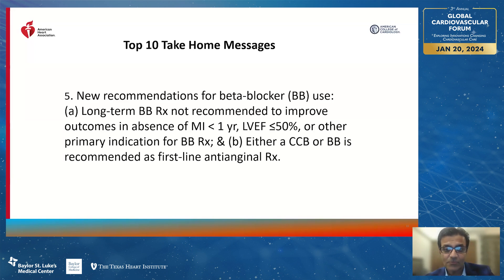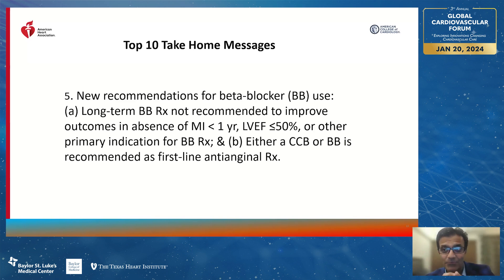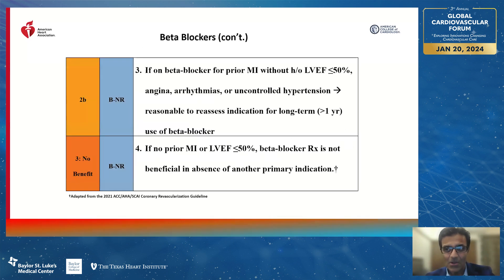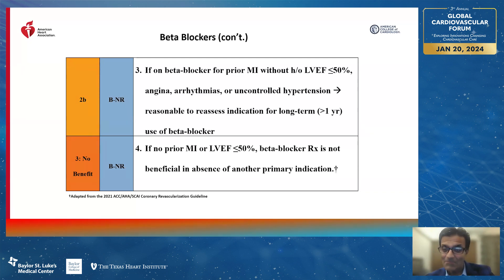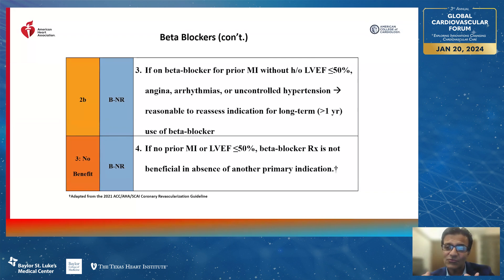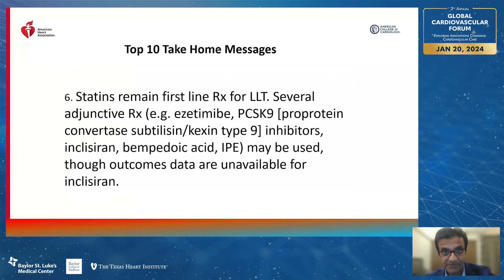Regarding beta blockers: if it has been one year after MI and the patient does not have other pressing indications such as uncontrolled hypertension, arrhythmia, or LVEF less than 50%, then perhaps we should reassess the need for beta blocker. In patients without prior MI or LVEF less than 50%, beta blocker is not recommended in the absence of any other primary indication.